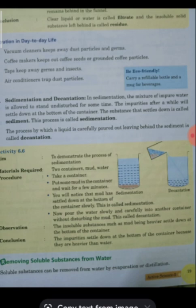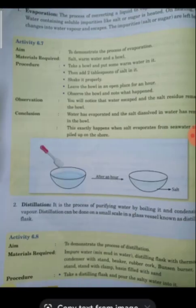The next topic is the removal of soluble substances from water. The first process is evaporation. Please come to page 80 and see the diagram. Evaporation is the process where liquid is converted to vapor. When you heat up the water, it is converted into vapor.